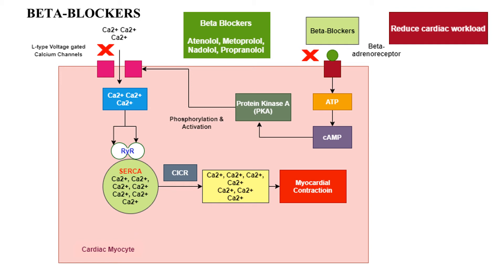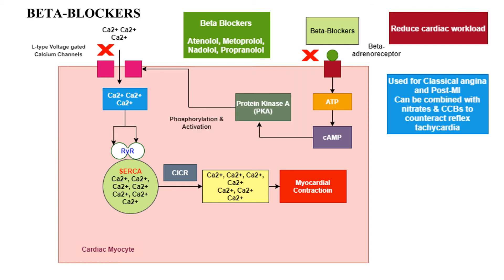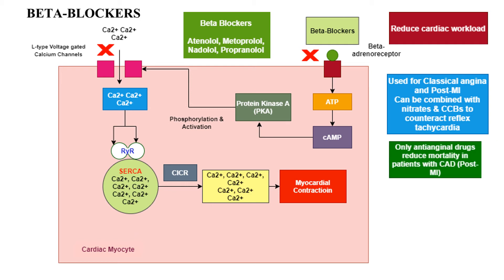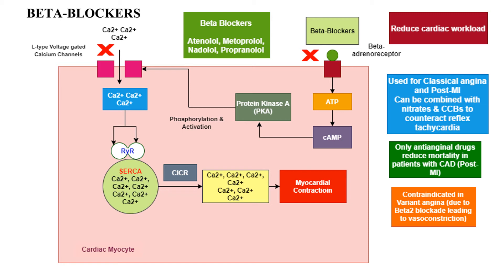All beta blockers reduce cardiac workload. They are used for classical angina and post-myocardial infarction, and can be combined with dihydropyridines and organic nitrates to counteract reflex tachycardia. They reduce mortality in patients with coronary artery disease, particularly post-MI patients. Beta blockers are contraindicated in variant angina, because beta-2 blockade may cause vasoconstriction and worsen Prinzmetal angina.